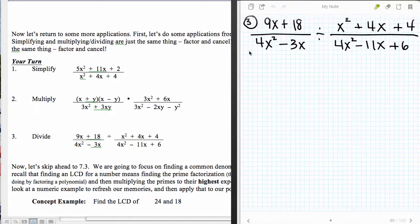Alright, so our last example from the Your Turn from section 12.1 and 12.2 material, we are going to multiply by the reciprocal here. So I'm just going to rewrite this as 9 times (x + 2), factoring this first one, and as x times (4x - 3), because nothing's going to change in there.